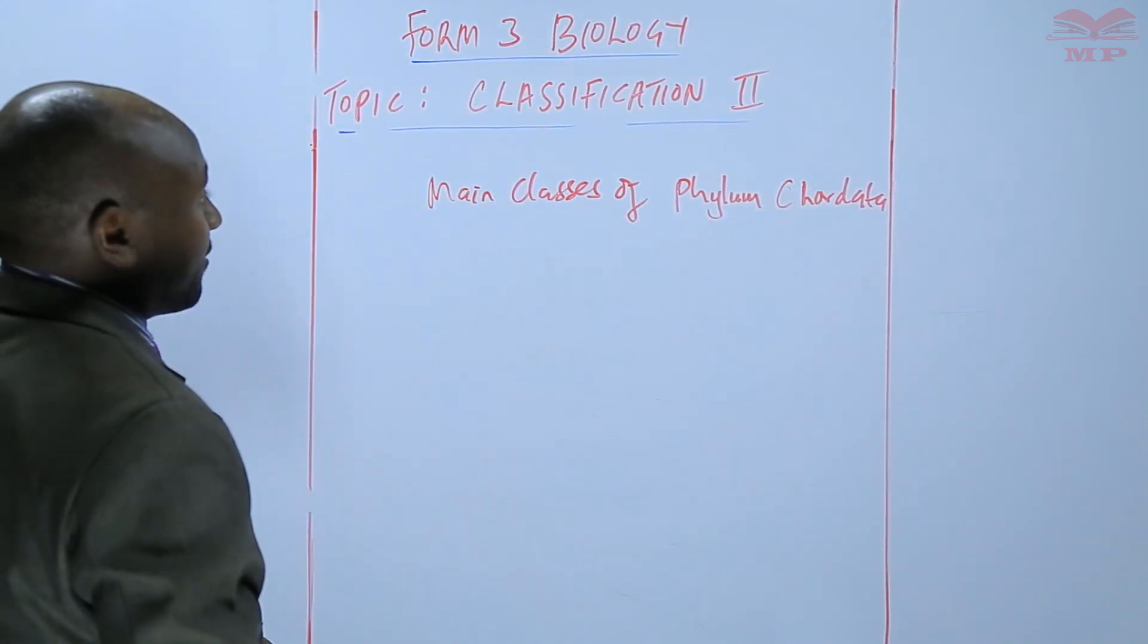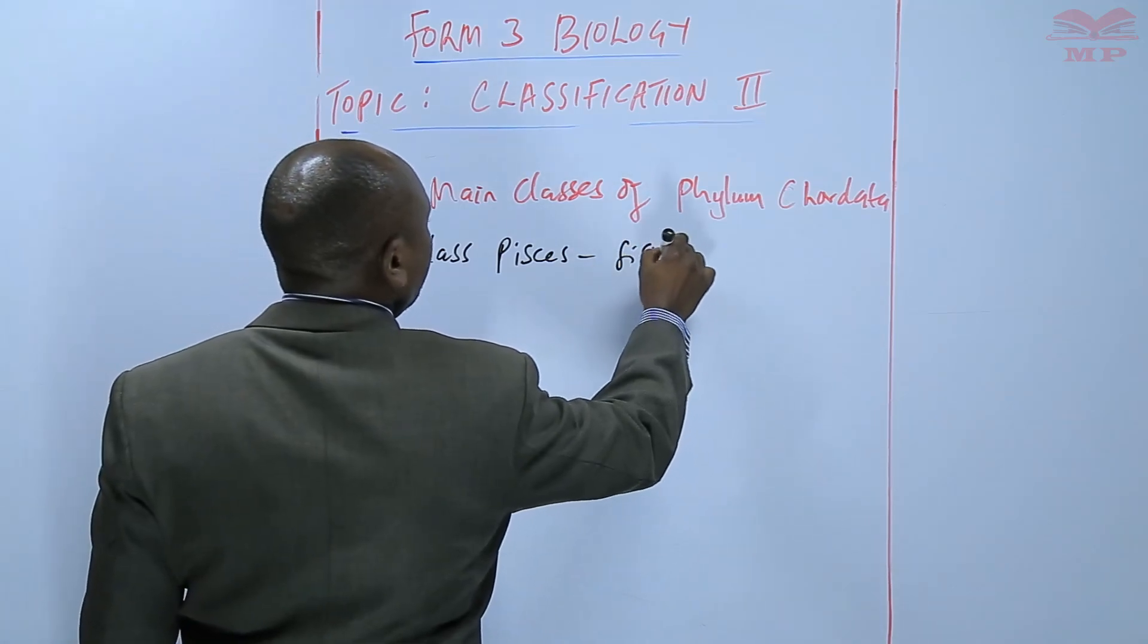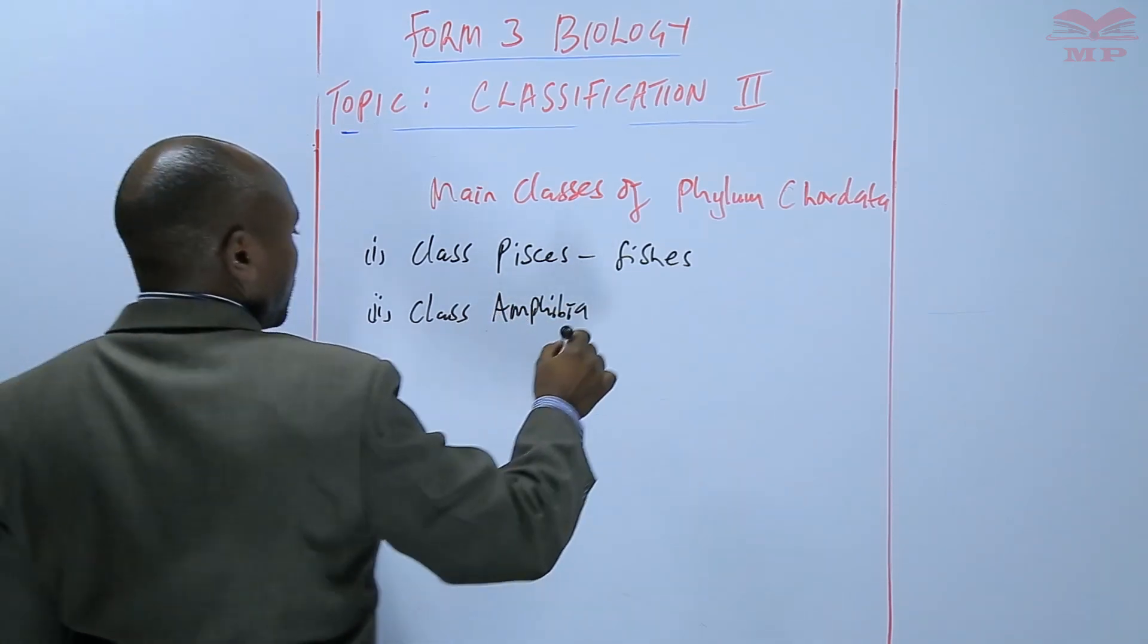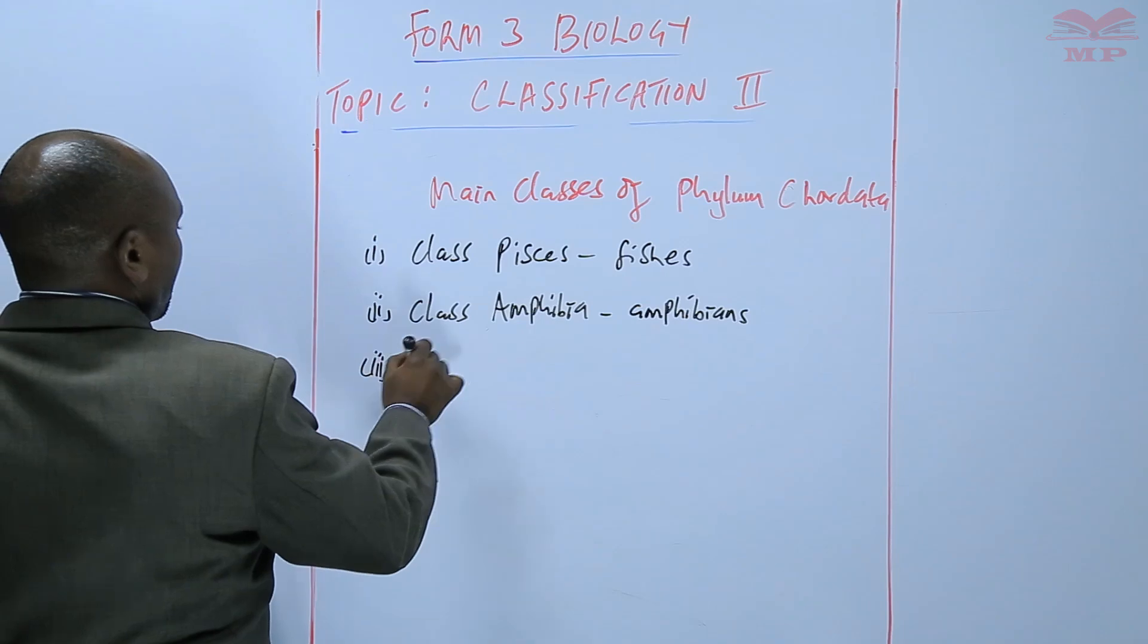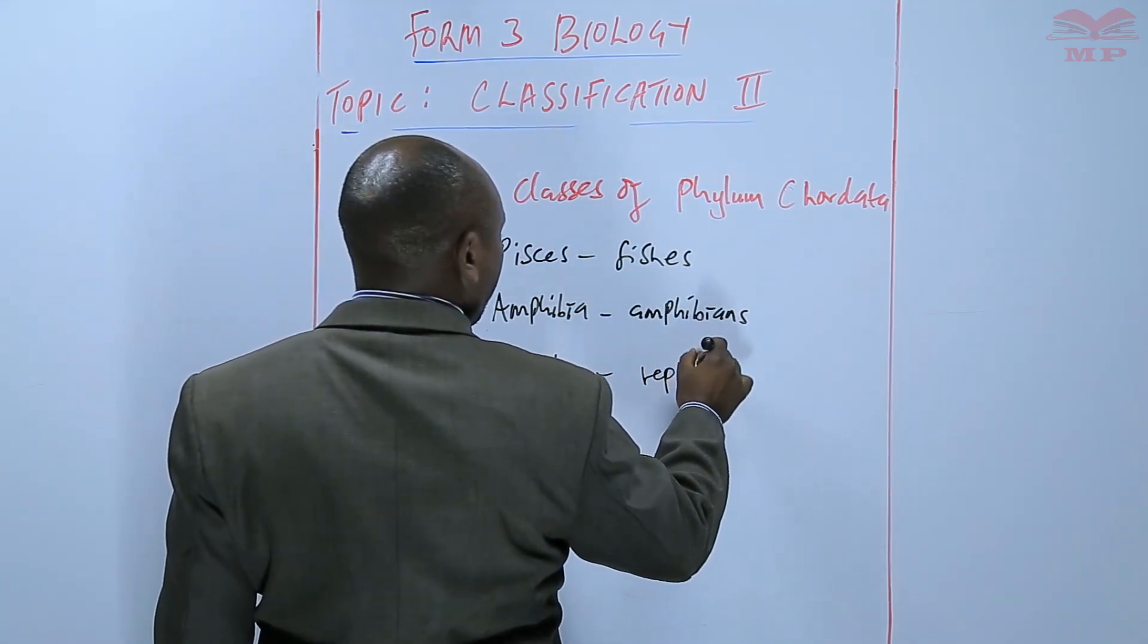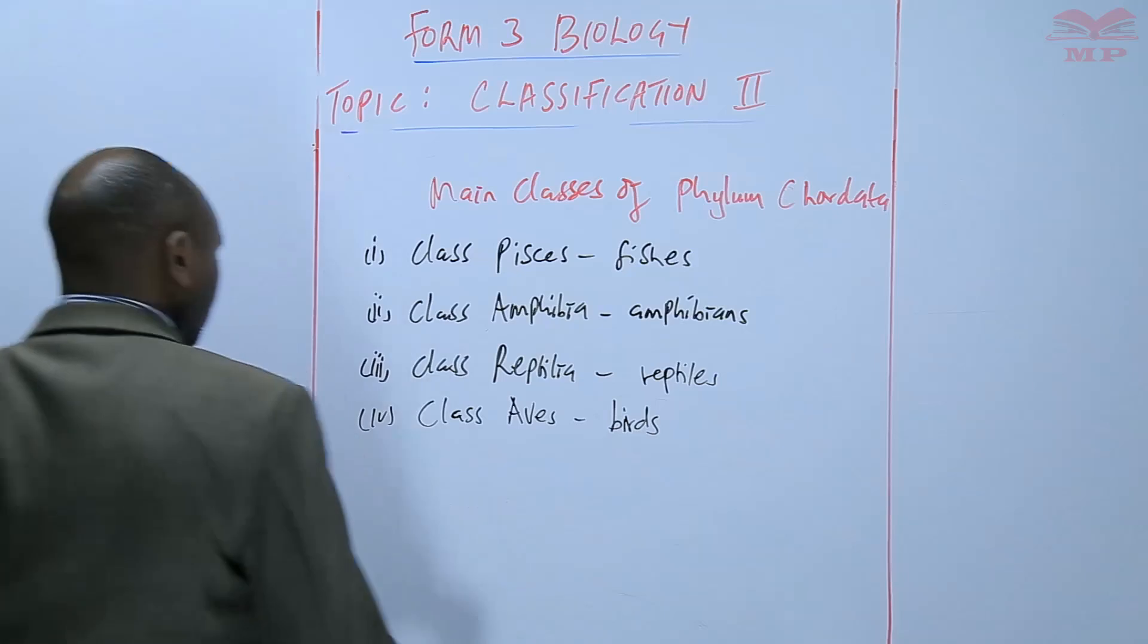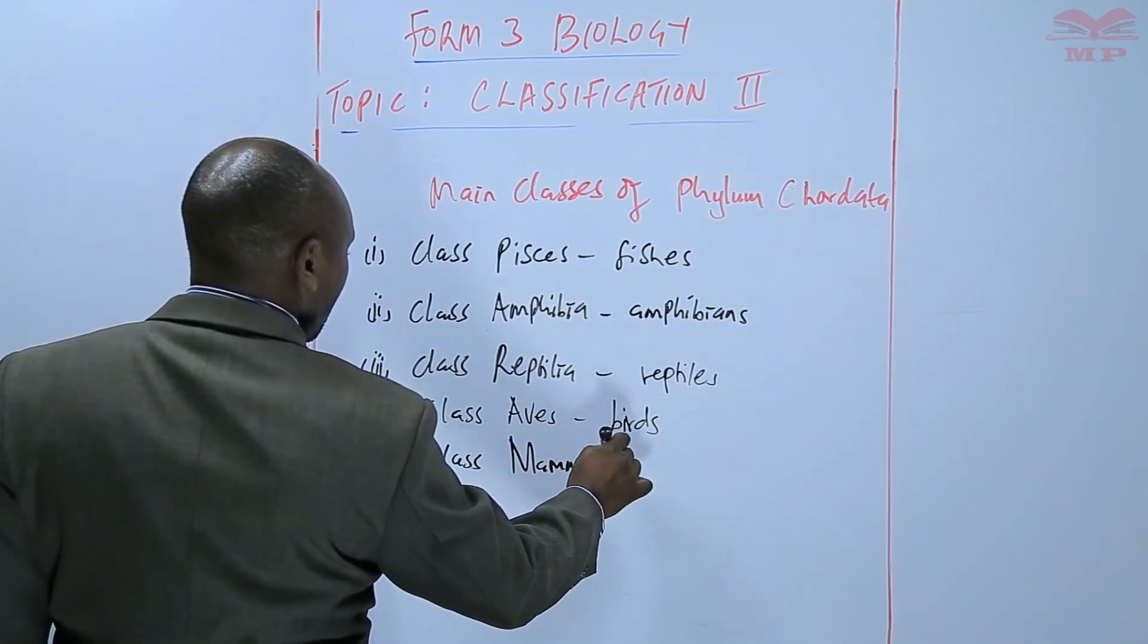We have the following classes within the Phylum Chordata. Here, we have class Pisces, whereby we have the various types of fishes. We have class Amphibia, the amphibians. Class Reptilia, the reptiles. Class Aves, where we have the birds. And then finally, we have class Mammalia, where we have the mammals.